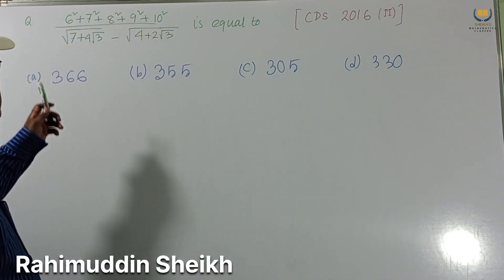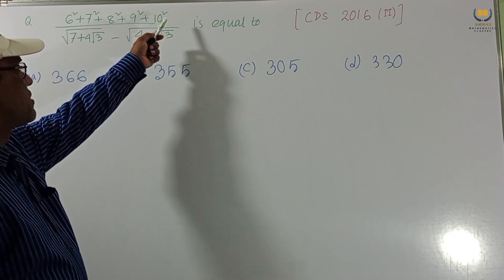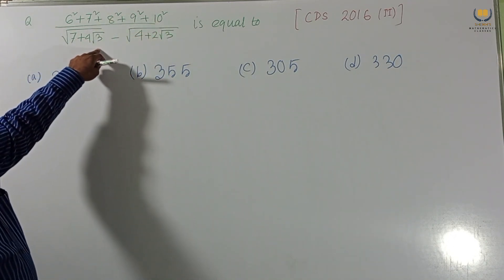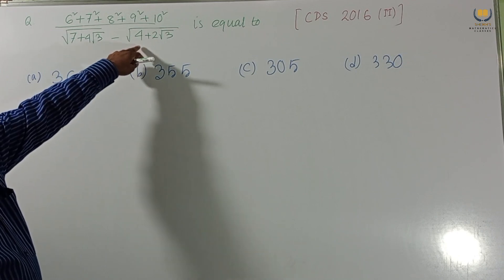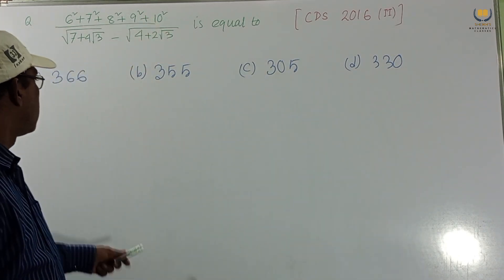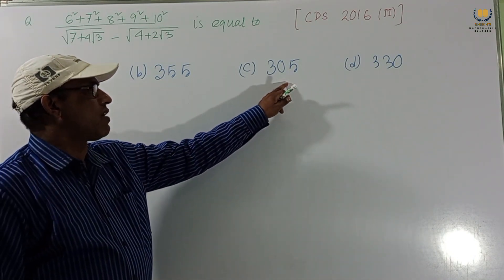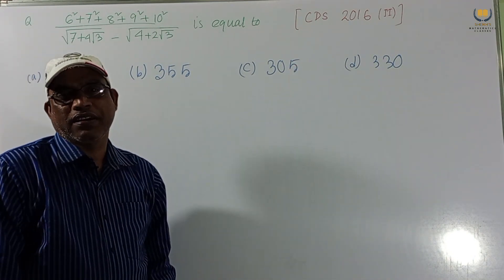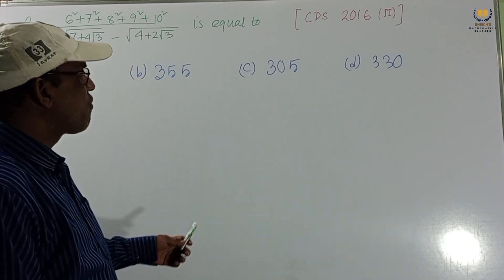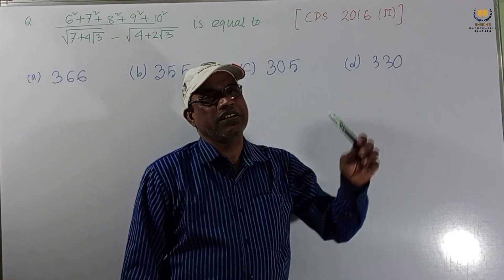The problem given: 6² + 7² + 8² + 9² + 10² divided by √(7 + 4√3) − √(4 + 2√3) is equal to which of the following: 366, 355, 305, or 330? We have to find the correct option. This was set in CDS 2016-2.